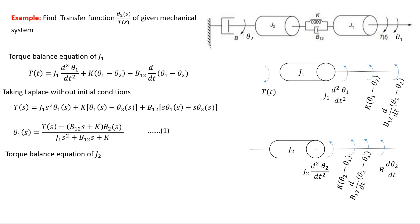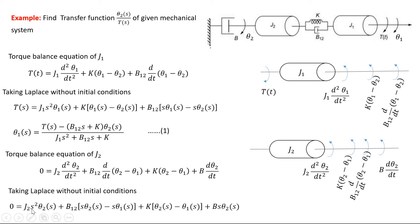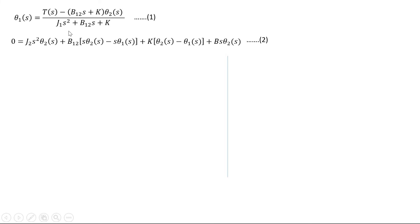For the torque balance equation of J2, there is no applied torque so the left side is zero. The right side gives: J2·d²θ2/dt² + B12·d(θ2 − θ1)/dt + K·(theta2 − theta1) + B·dθ2/dt. Taking the Laplace transform: 0 = J2·S²·θ2(S) + B12·S·(θ2(S) − θ1(S)) + K·(θ2(S) − θ1(S)). Rearranging, the θ2(S) terms give J2·S² + B12·S + K, and the θ1(S) term is −(B12·S + K).